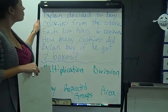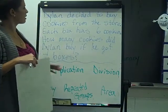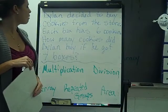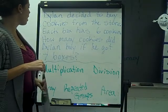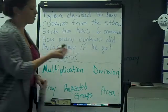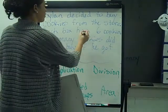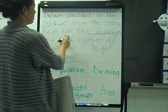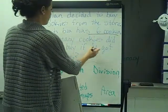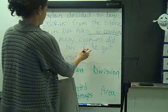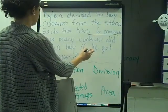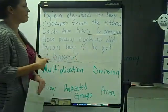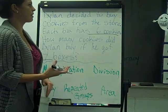So looking at this problem: Dylan decided to buy cookies from the store. Each box has six cookies. How many cookies did Dylan buy if he got seven boxes? So I notice it's saying there are six cookies in each box and there are seven boxes. So if there's six cookies in each box and seven boxes, that's six sets of seven.